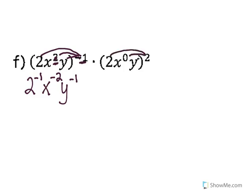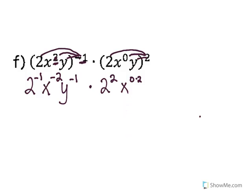For the second parentheses: two goes squared, x to the zero goes squared, y goes squared. So two squared; x to the zero times two is x to the zero, which is just one; and y to the second.